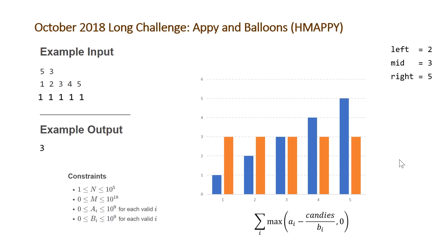It's a straightforward problem once you recognize the need for binary search. The key simplification is that since we're minimizing the maximum candies (not the total), we can apply the same candidate maximum to every day. Then for each day, subtracting the candies divided by cost from the balloon demand gives the remaining balloons needed, and summing over all days lets you check feasibility against m.